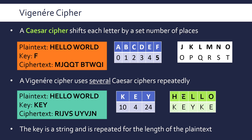Neighbouring characters use different shifts: H uses 10, E uses 4, and L uses 24, then it repeats. Comparing the two methods — in the Caesar cipher, the two Ls are both represented by the same character. But notice how the two Ls in the Vigenère cipher now have different characters in the cipher text. In Caesar, it's quite obvious there's a repeating character, but with Vigenère we can't tell, because different shifts are applied to each.